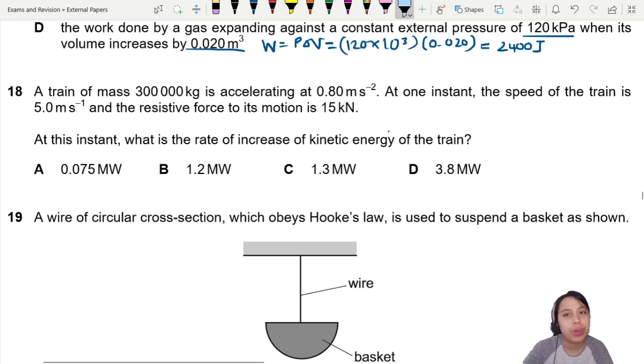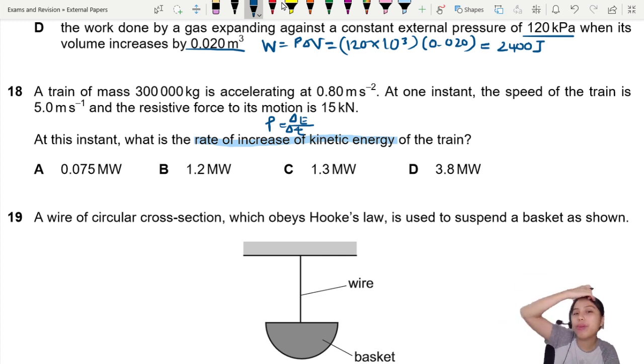That's an interesting way of saying it. Rate of change of energy - isn't that the same thing as power? Because power is energy change per unit time, or you can say ΔE/ΔT, which is the more accurate one. So we are really asking what is the power of the train?